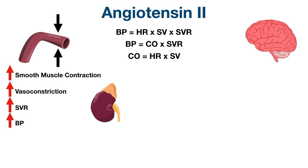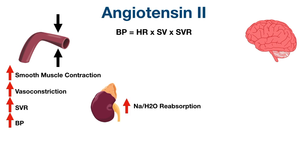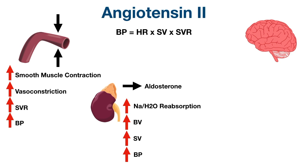Angiotensin 2 also affects the kidney. First, it can directly stimulate sodium and water reabsorption at the proximal tubule of the nephron. Reabsorbing sodium and water back into the bloodstream increases blood volume, which increases stroke volume and cardiac output, which increases blood pressure. Angiotensin 2 can also stimulate the release of aldosterone from the adrenal cortex. Aldosterone is a hormone that acts on the distal tubule to increase sodium and water reabsorption, which similarly increases blood volume, stroke volume, and blood pressure.